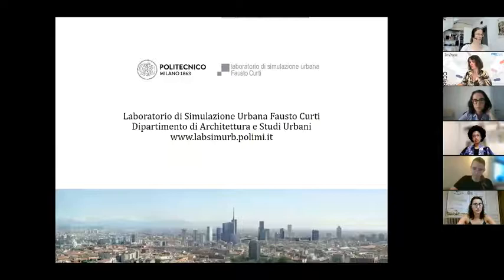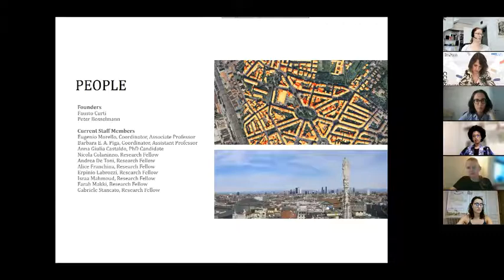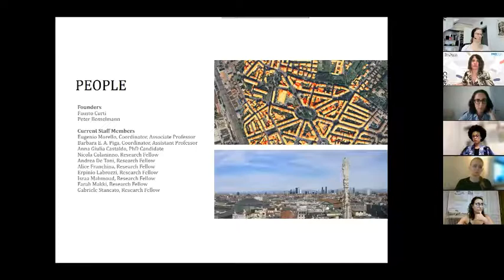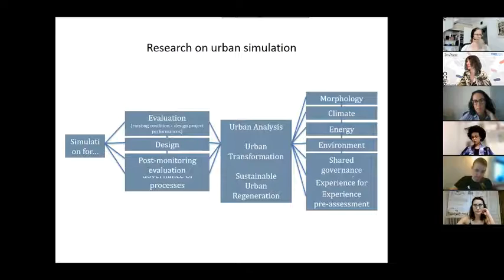Our laboratory has done work on estimating solar potential on urban textures and integrating 3D modeling with immersive visualization to give back visual and sensory aspects of urban transformation. We use simulation both for evaluating design and for co-designing places. This is especially important for getting university communities and students involved in imagining together the future of their campus.